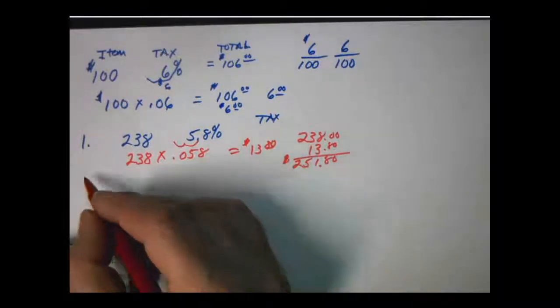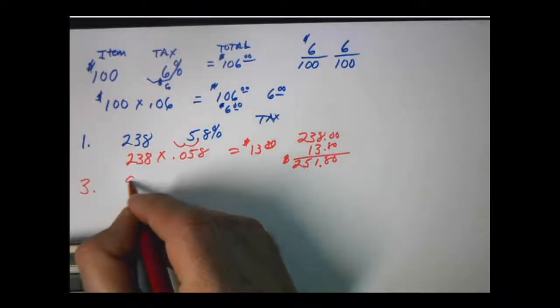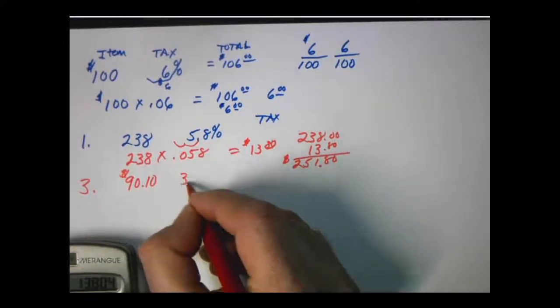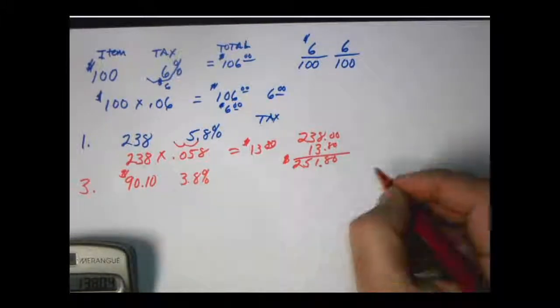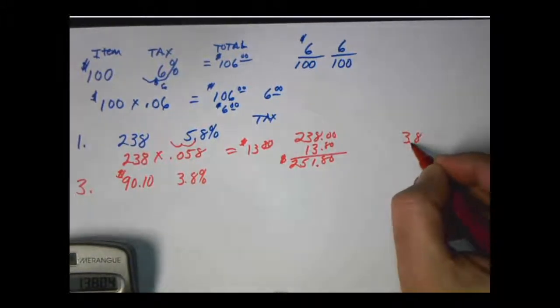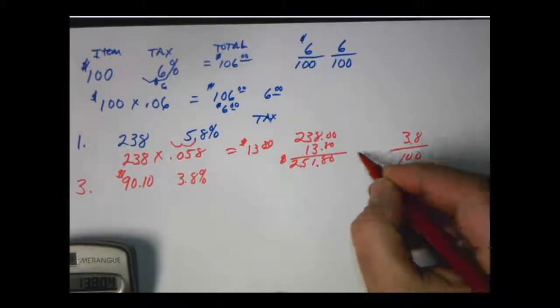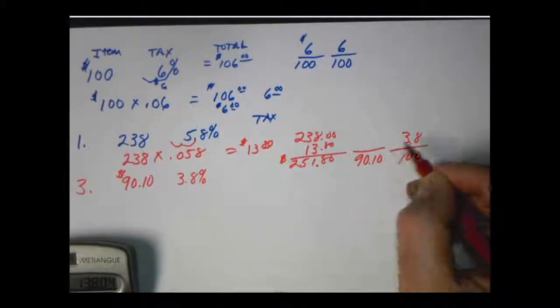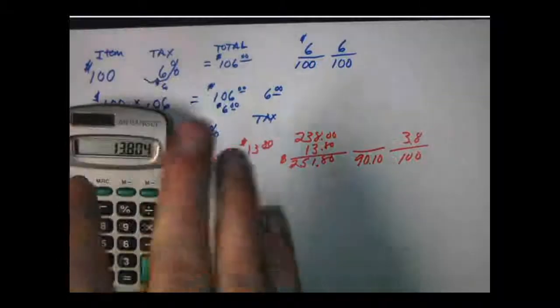How about number three. We have $910, 3.8%. And let's set it up the other way this time. Let's do 3.8. That's going to go over 100. The item's going to go on the bottom. And again we're just going to cross multiply and divide.